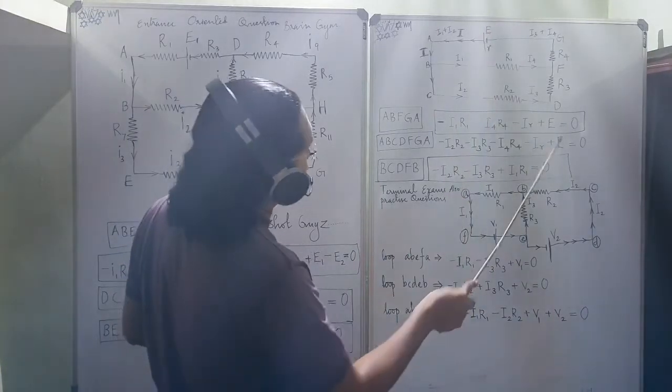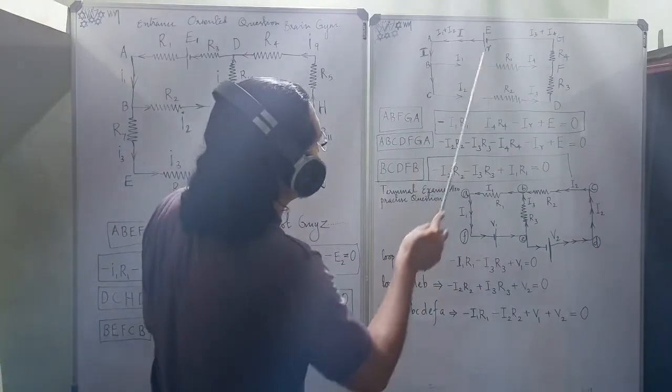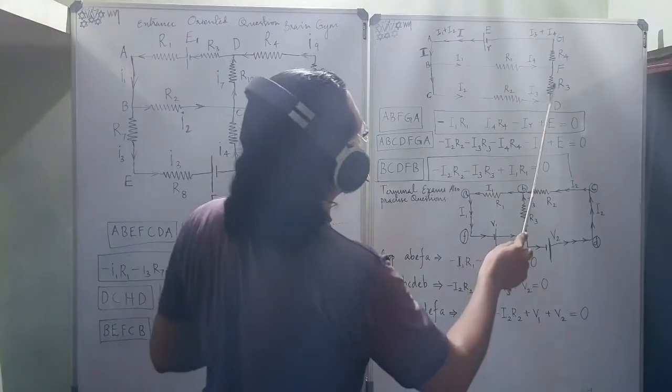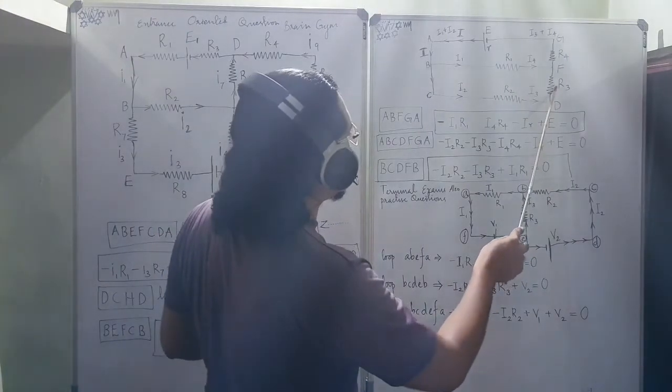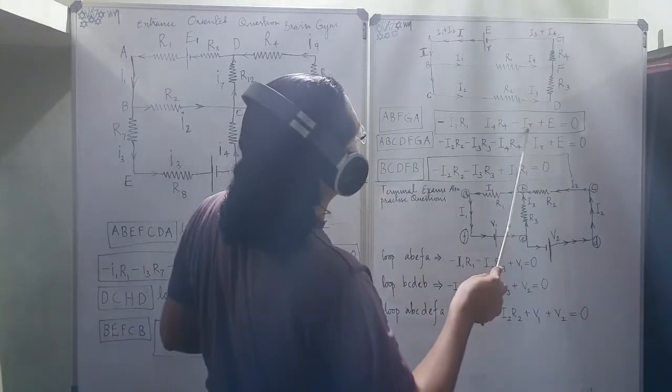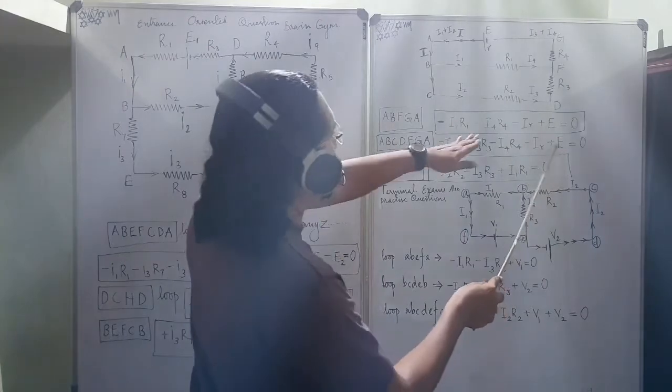But emitting from this I2 is taken as negative. I2 into R2. Minus the same direction, I3 into R3. This current into R3. Minus I4 into R4. Minus I current into the internal resistance. Plus cell is given.